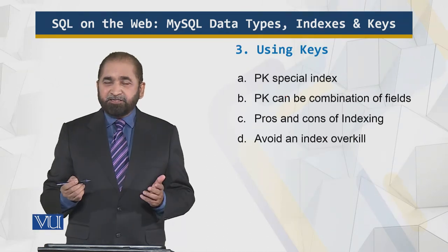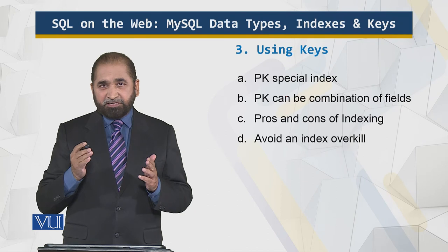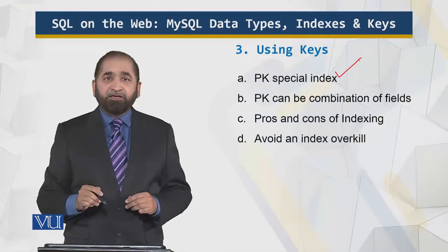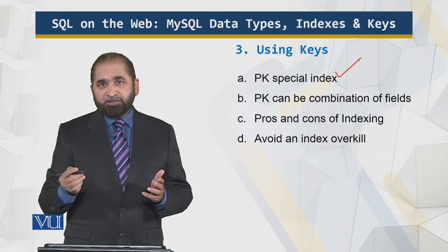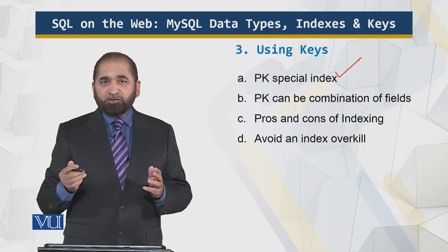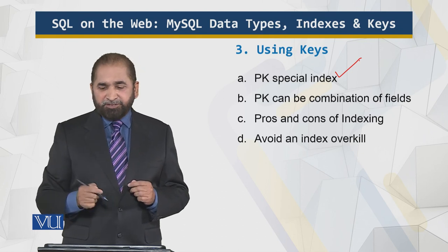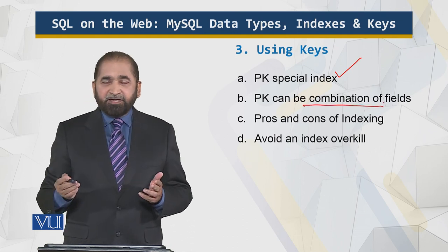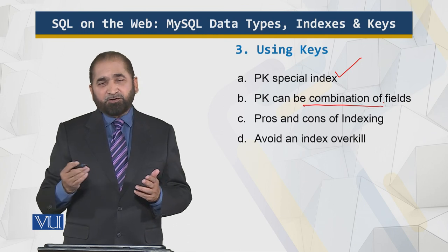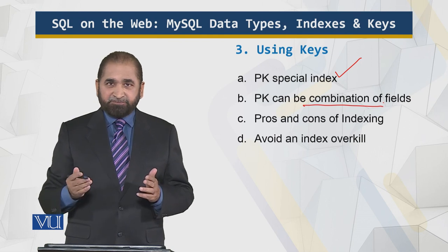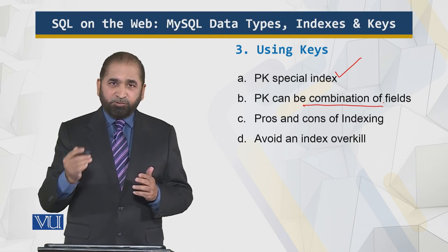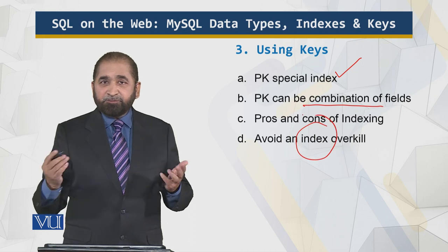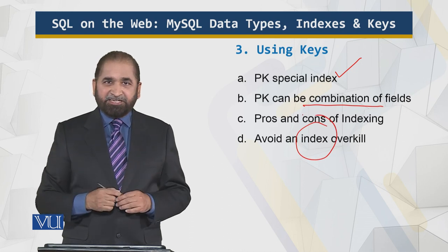We have a special key — the primary key — which is the column that has no null values and no repeating values. We put an index on it because we search by things like account number for a certain client. It can be a combination of fields, but that combination must be unique. The cons of indexing are that indexes take space, and too many indexes can become an overkill — loading multiple indices takes time and can slow performance.